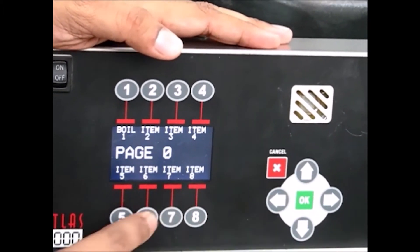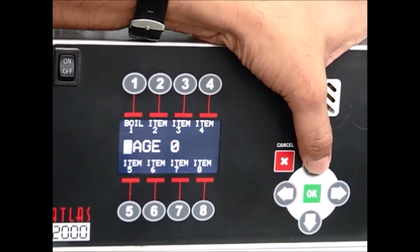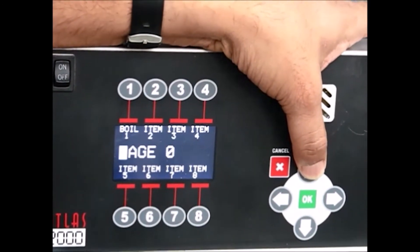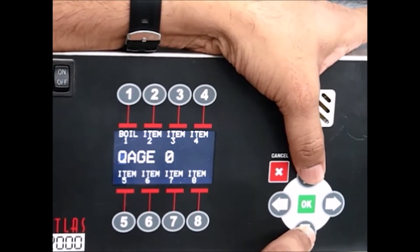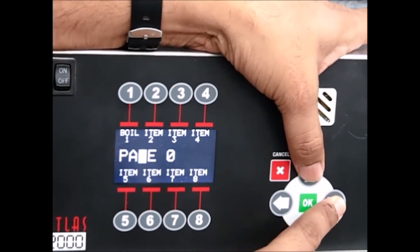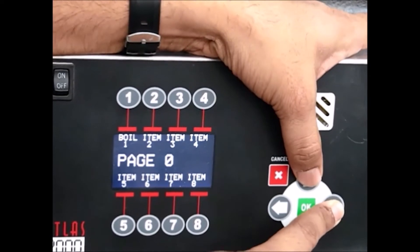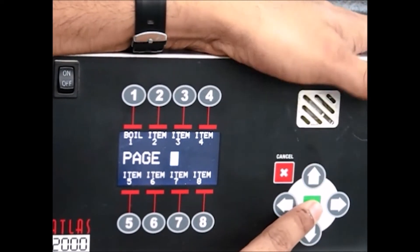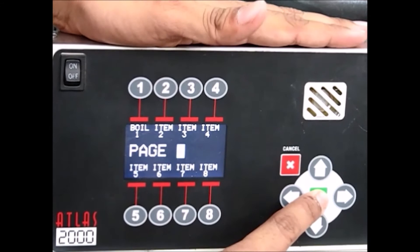You can now begin editing the page name. Press the up or down arrow button to select a new character. Press the left or right arrow button to move the cursor to the next character. Press OK to save the changes.